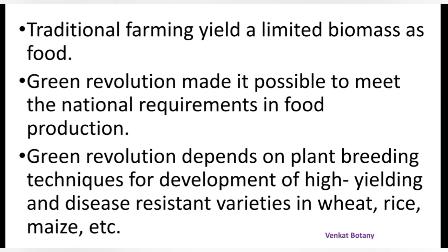The Green Revolution depends on plant breeding techniques for the development of high-yielding and disease-resistant varieties in wheat, rice, and maize. These advances in plant breeding were central to achieving the goals of the Green Revolution.